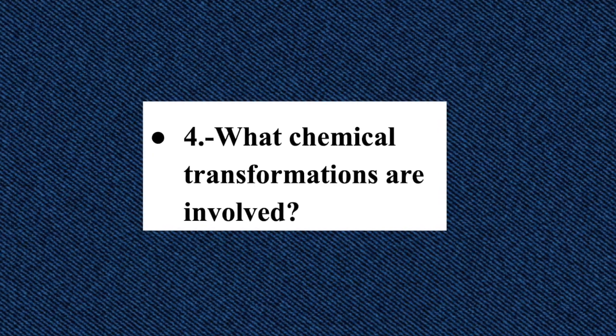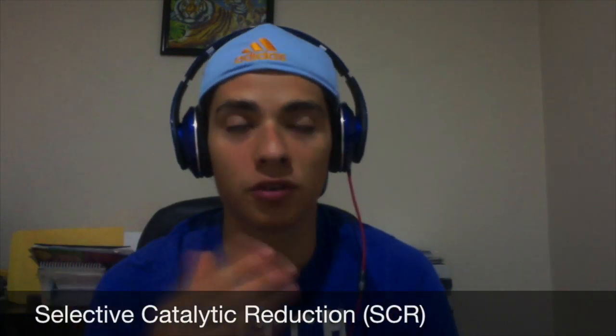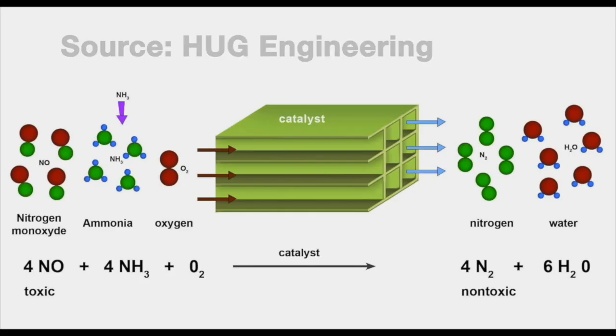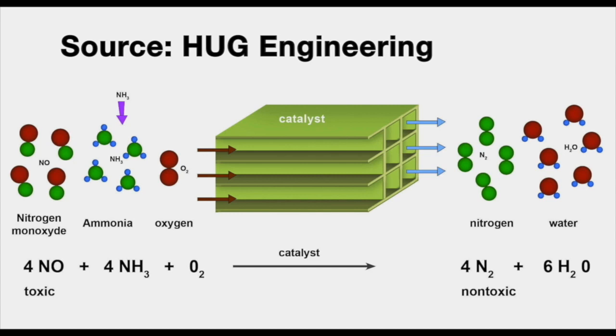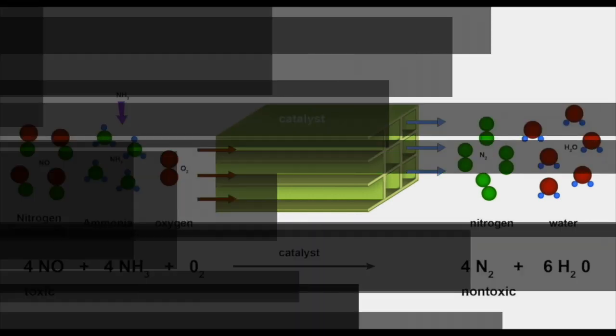Question four: what chemical transformations are involved? The purpose of this chemical process is the transformation of nitrogen oxides into inert gases. Two species must be present: a reductant must be added to the flue gas which contains the nitrogen oxides, and with the selective catalyst, a redox reaction takes place. The reactant species are the nitrogen oxides and the reductant gas — in our assessment, ammonia — which are transformed into nitrogen and water vapor, which are no longer harmful for the environment.